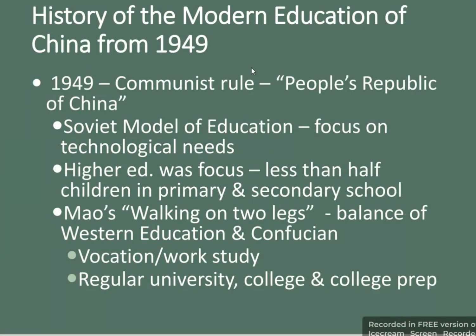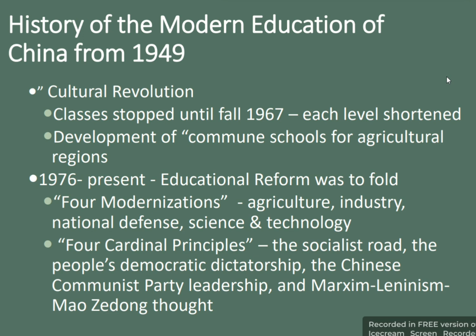The history of modern education in China from 1949 began with Communist rule and the establishment of the People's Republic of China. A Soviet model of education was adopted, focused on technological needs, with higher education emphasized. Less than half of children were in primary and secondary education. The system aimed to balance Western education and Confucianism, with options including vocational or work-study programs, regular university, and college and college prep.